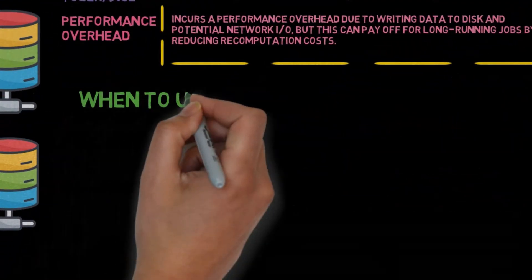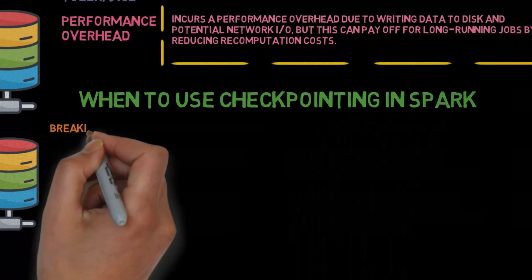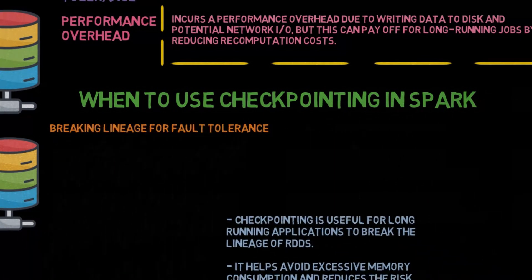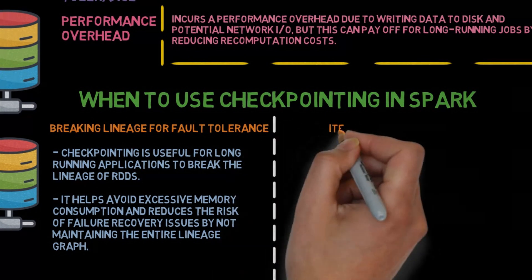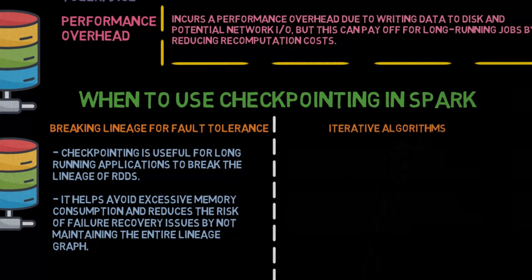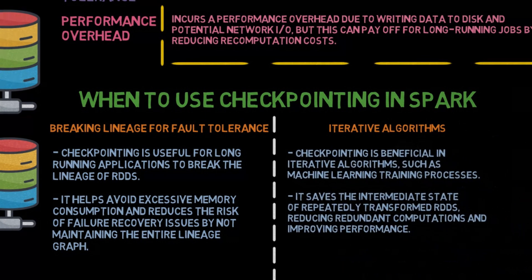When to use checkpointing in Spark: Breaking lineage for fault tolerance — checkpointing is useful for long-running applications to break the lineage of RDDs. It helps avoid excessive memory consumption and reduces the risk of failure recovery issues by not maintaining the entire lineage graph. Iterative algorithms — checkpointing is beneficial in iterative algorithms such as machine learning training processes. It saves the intermediate state of repeatedly transformed RDDs, reducing redundant computations and improving performance.